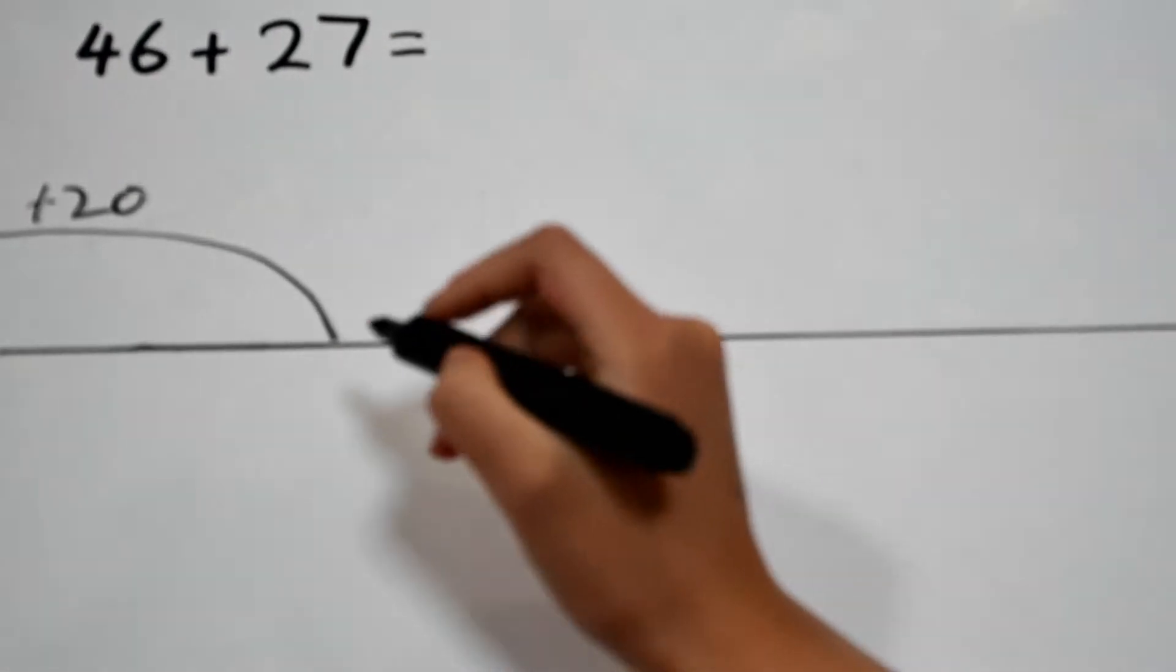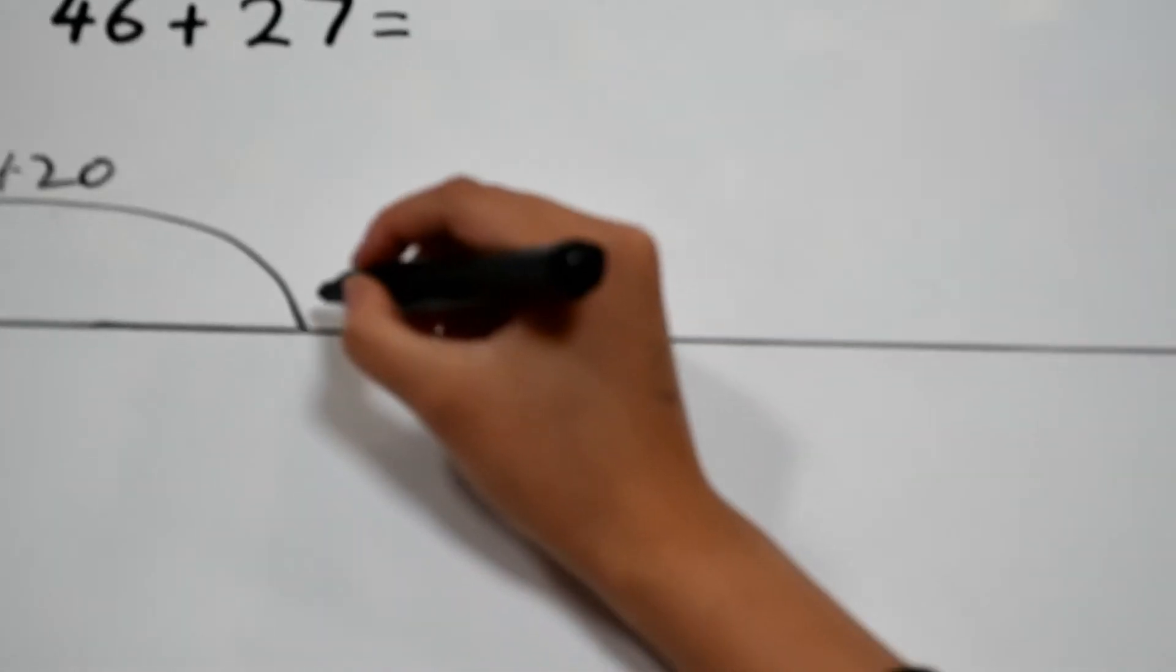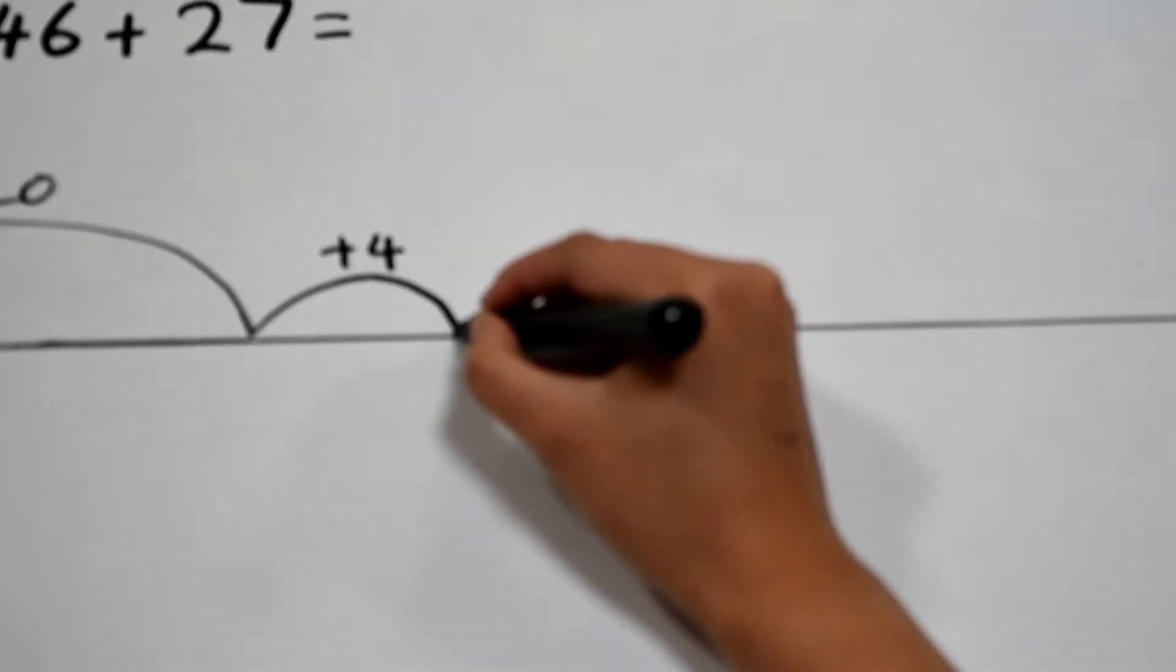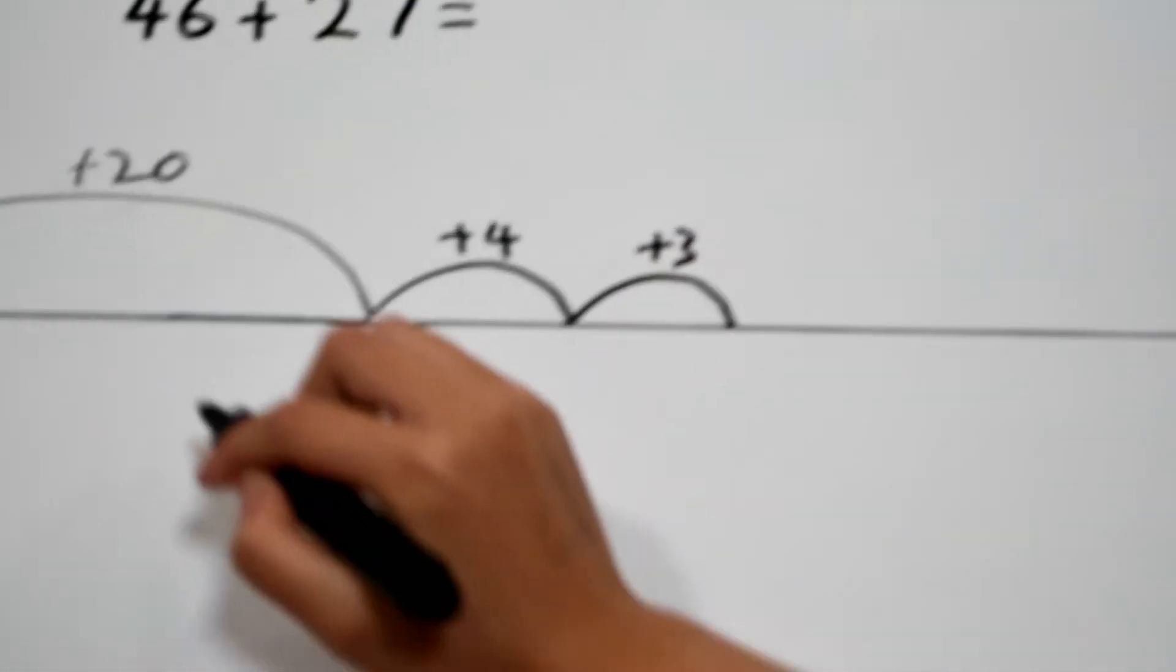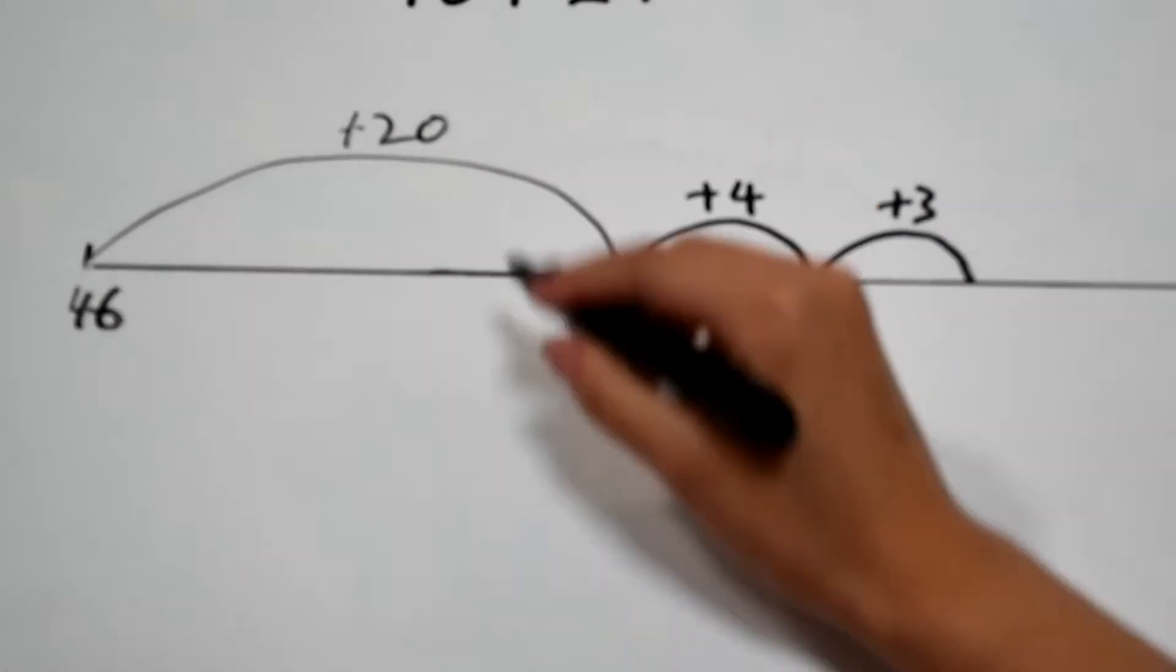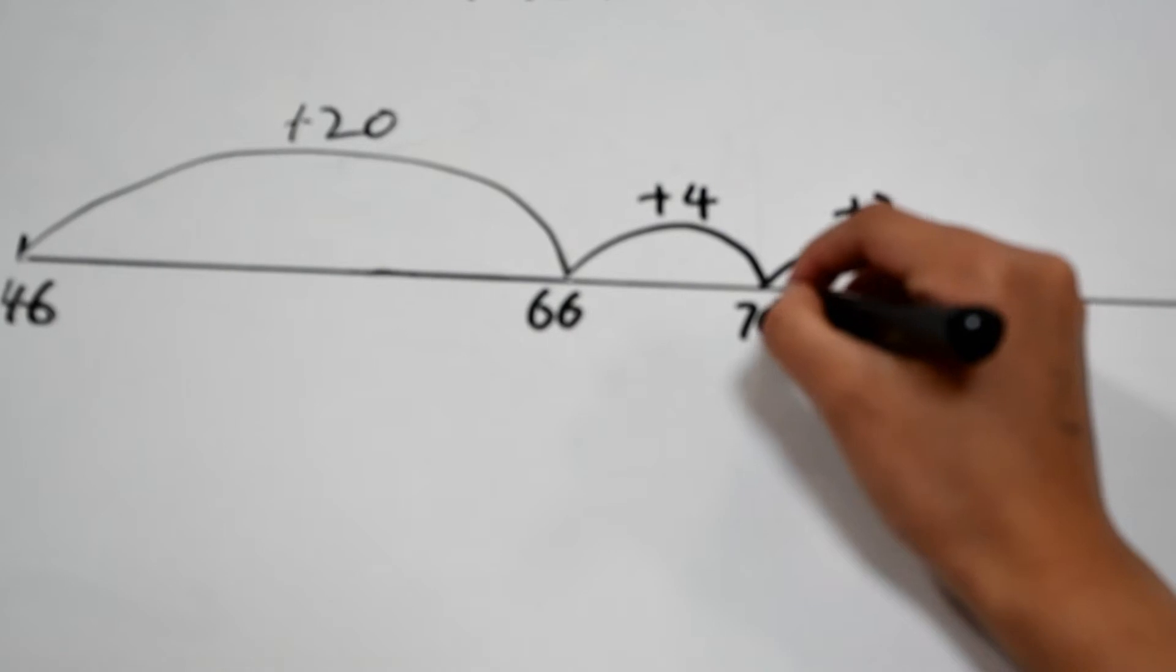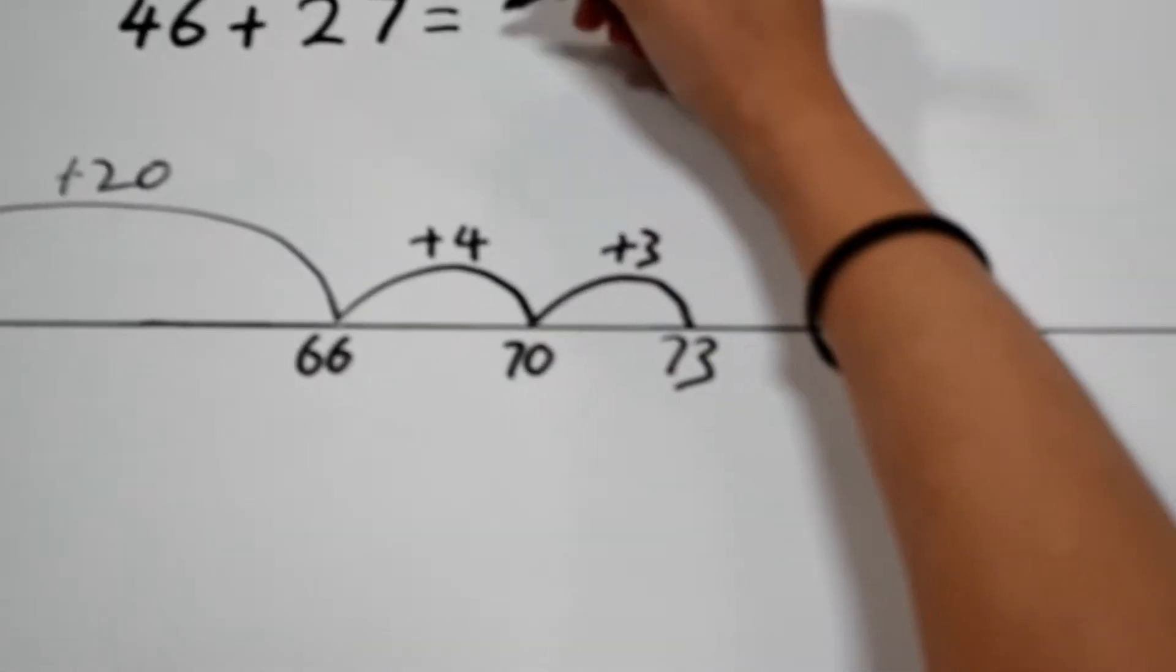And now there's the ones. We're not going to plus 7 straight away because that's a little bit difficult, so we're going to do plus 4 and plus 3. Now what we do is add it together. 46 plus 20 is 66, plus 4 is 70, plus 3 is 73. Therefore, the answer is 73.